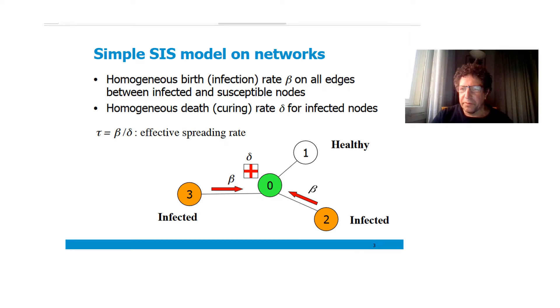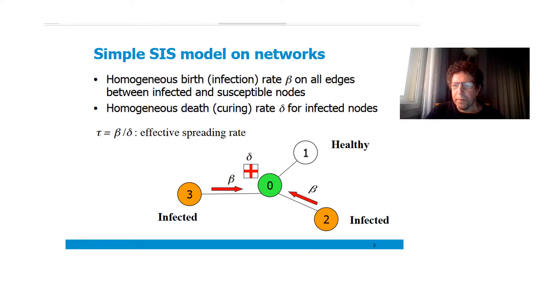Contaminated nodes become healthy again with rate delta. The rate at which a node becomes contaminated is a constant beta times the number of contaminated neighbors it has.